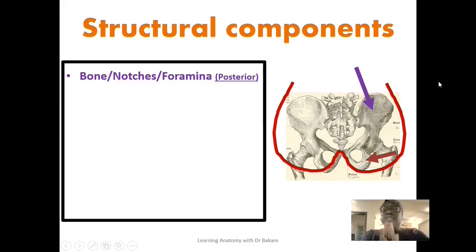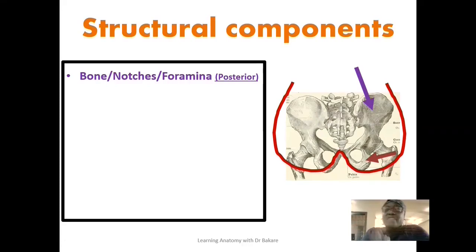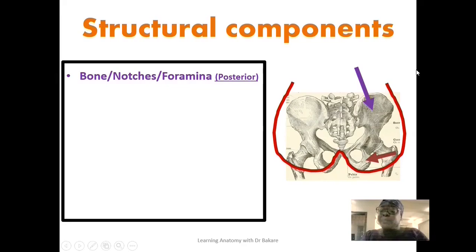The ilium and the ischium, located at the posterior region of the bony pelvis, also present some structural features including the formation of notches — indentations created around these bones. These notches are further transformed into foramina, which we will be highlighting as we go through this lecture. This is an important presentation to understand during the course of study.